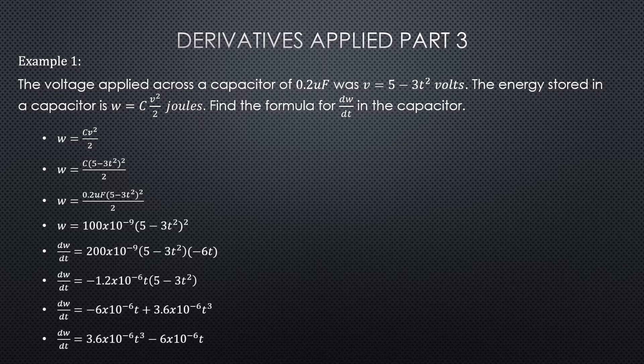The energy stored in a capacitor is W equals CV² over 2, and the unit is joules. Find the formula for dW/dt in the capacitor.